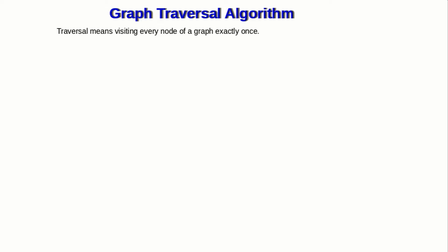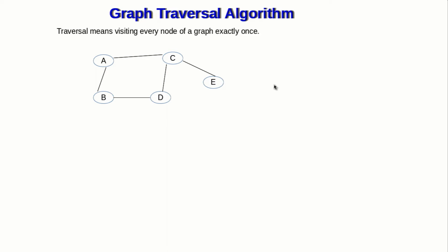A graph is not a linear data structure like an array or linked list. In an array or linked list, we could loop through each of the elements either in the forward or backward direction. But if I select any arbitrary vertex — let's say A is our start vertex — from A I could go to B or C. If I go to C, I could either go to D or E. So I have plenty of options, and we need some systematic way to handle this.